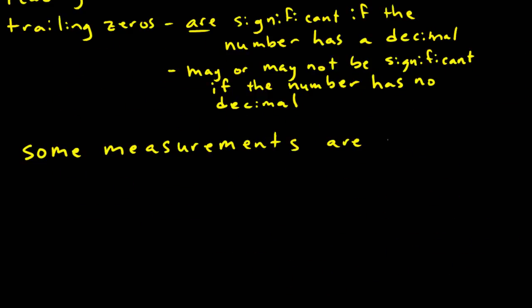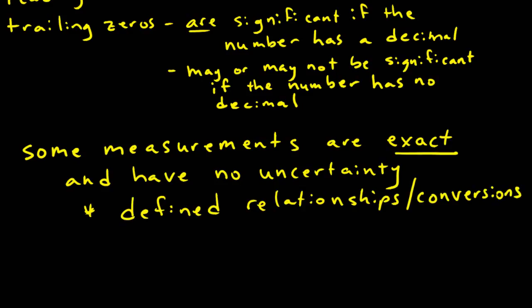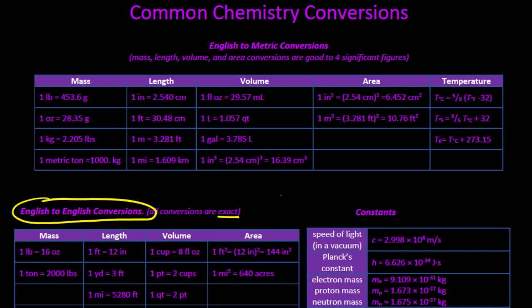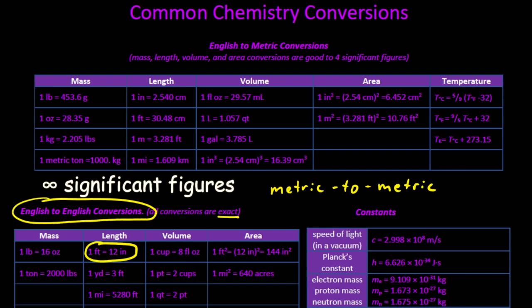Now there may be some measurements that are exact and have no uncertainty. Such measurements would include defined relationships or conversions, such as the English to English conversions on your conversion sheet, or metric to metric conversions. For example, if we say that for every one foot there are 12 inches, we don't mean that there's 11.9999 inches in one foot, or 12.00001 inches in one foot. We mean that there is exactly 12 inches in one foot. Since an exact measurement has no uncertainty, we can also say it has an infinite number of significant figures.